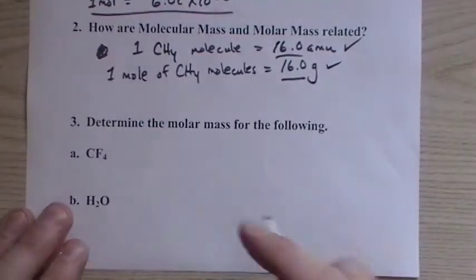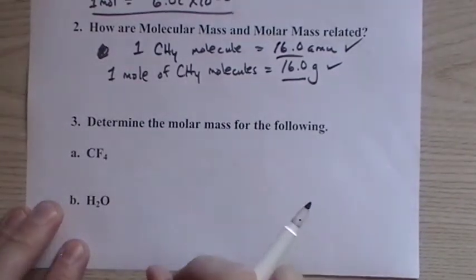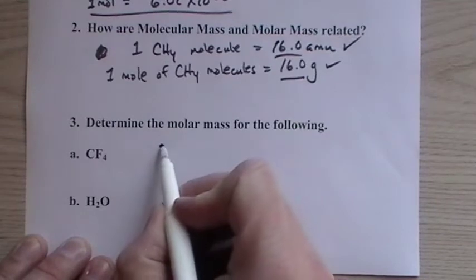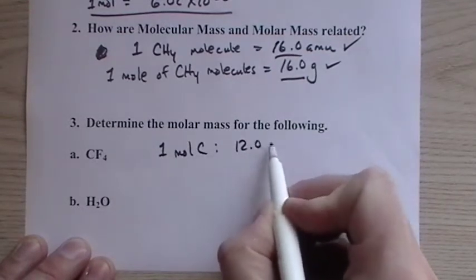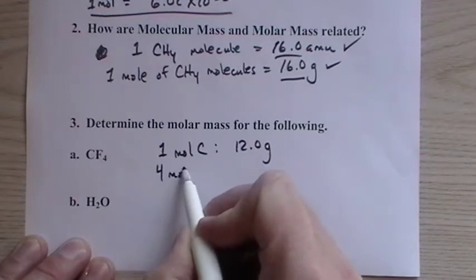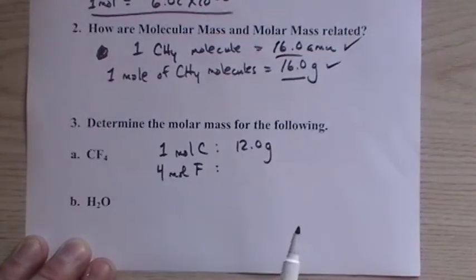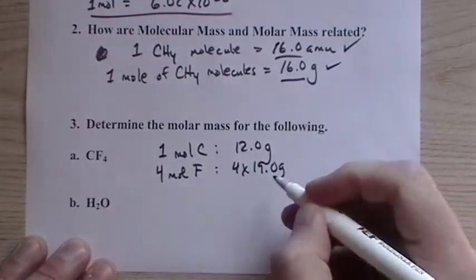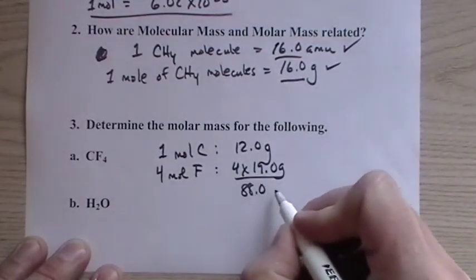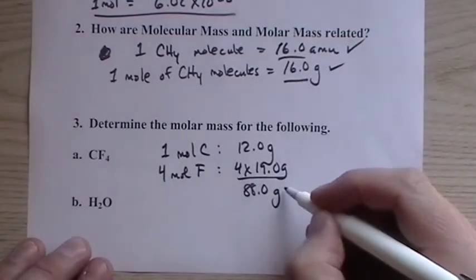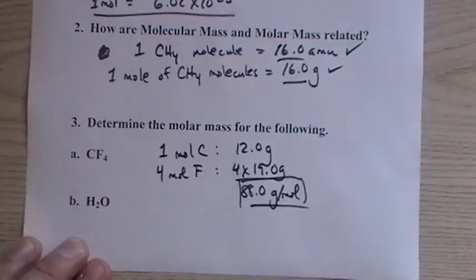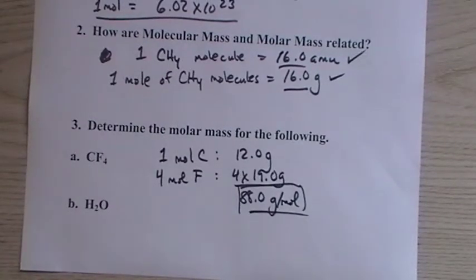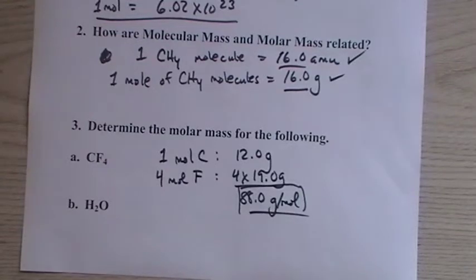This is pretty short because it's the same math as before - we're using the same numbers from the periodic table, just calling them grams now. For carbon tetrafluoride CF4: one mole of carbon is 12 grams, four moles of fluorine is four times 19 grams. That comes up to 88 grams per mole. You could say the molar mass is 88.0 grams per mole of carbon tetrafluoride.